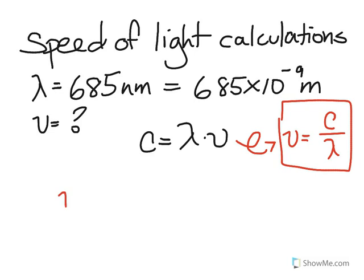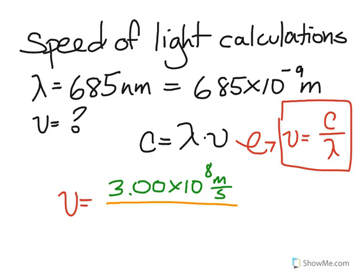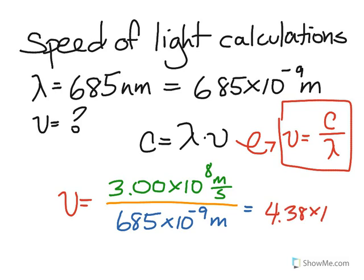I'm going to just plug in the numbers. So nu, which is the frequency, is equal to the speed of light, which happens to be 3.00 times 10 to the 8 meters per second, divided by the wavelength, which in this case is 685 times 10 to the negative 9 meters. When we plug it into our calculators, the frequency comes out to be 4.38 times 10 to the 14th hertz or 1 over second.